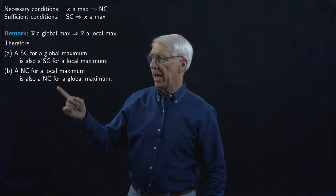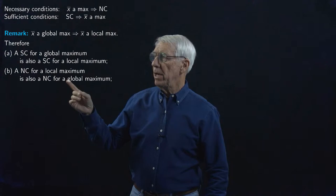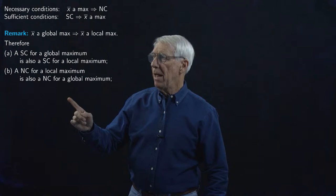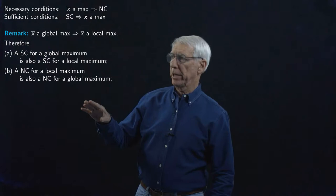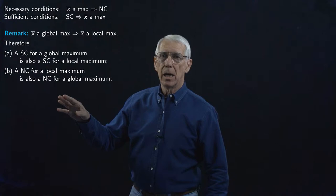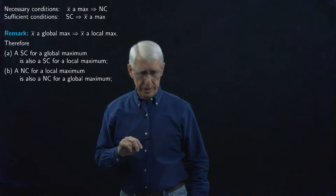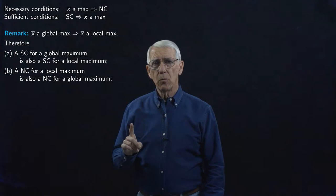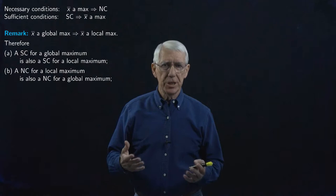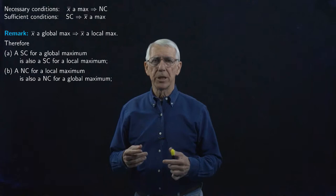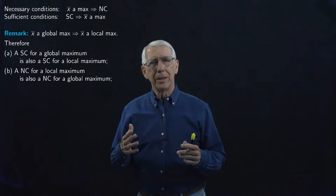Part A says: if we have conditions that are sufficient to guarantee we have a global maximum, then of course those conditions will guarantee we have a local maximum as well, because the global maximum is a local maximum. And Part B says: if we have a necessary condition satisfied for a point to be a local maximum, then that condition is going to have to be satisfied if we have a global maximum. That's actually kind of important — because when we're modeling an economic decision maker as maximizing some objective function,